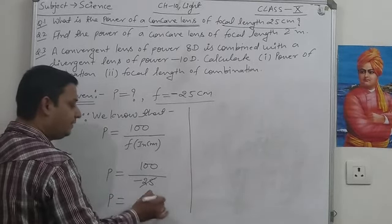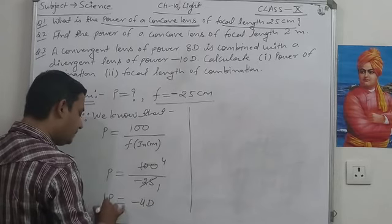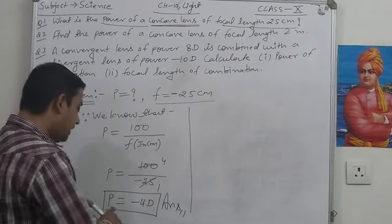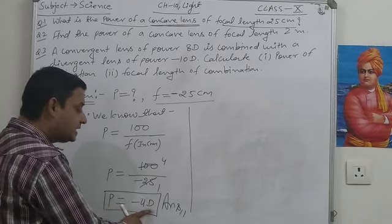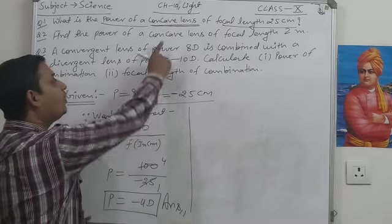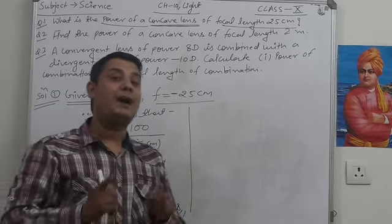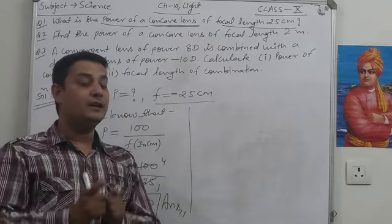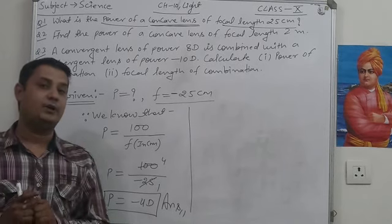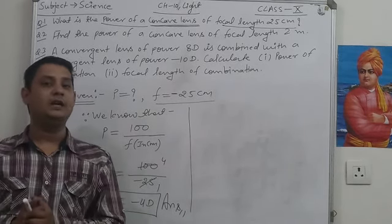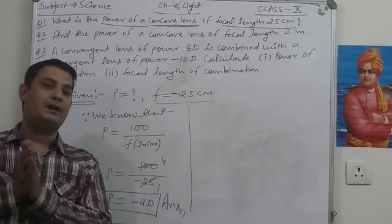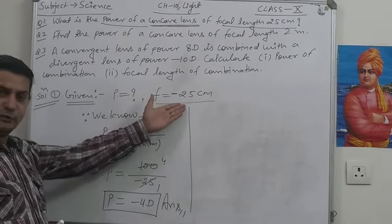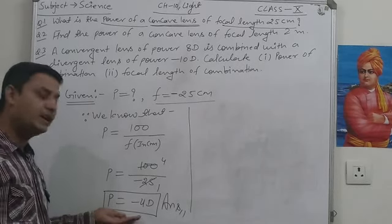With f equals minus 25 cm, the result is P equals 100 upon minus 25, which gives minus 4 Diopter. This is the power of the concave lens. The negative sign confirms it is a concave lens — a lens whose focal length is negative will always have negative power. This is a concave, diverging lens, so both the focal length and power are negative. This is the correct answer.